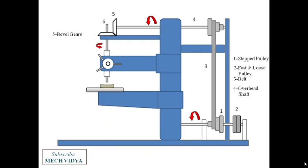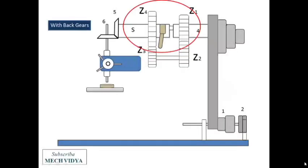Now we can increase the speed ranges if we employ back gears in the machine. So what are these back gears? These are nothing but a series of 4 gears which transmits motion among themselves.